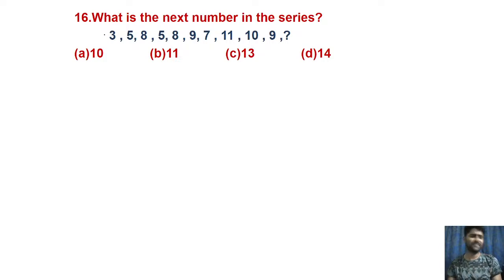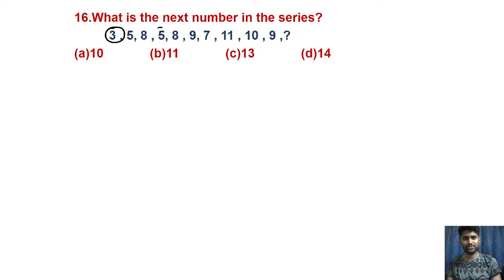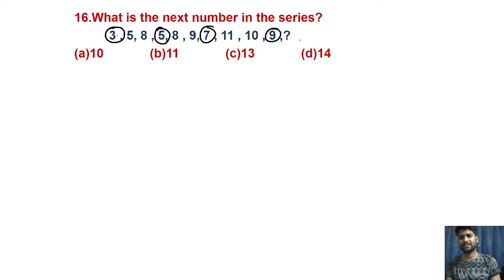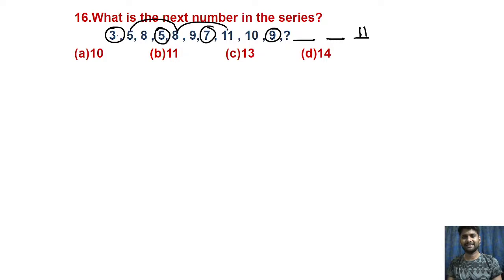Next series: 3, 5, 8, 5, 8, 9 — it is not a specific single pattern. When you don't understand a series, view it as an alternate series. Alternate numbers: 3, 5, 9 — and the other set: 5, 8. Wait — looking at the alternate groups: one group is 3, 5, 9 and the other adds 3 units each time: 5, 8, next would be 11. For the second alternate group adding 3 units, the answer is 14. So the answer is 14.